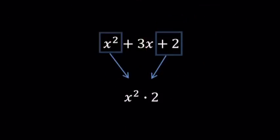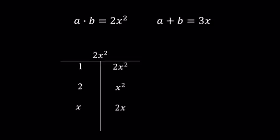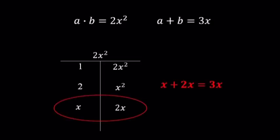Take the first term, multiply it by the third. x² times two is 2x² a word. Now we gotta find the factors of this product, a sum to the middle term is what we gotta do!